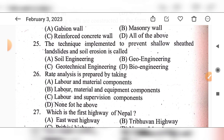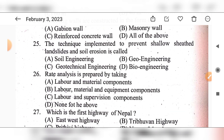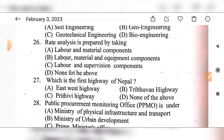Question 26: Rate analysis is prepared by taking — option A: labor and material components, option B: labor, materials and equipment component, option C: labor and supervision component, option D: none of the above. The answer is option B: labor, material and equipment component.